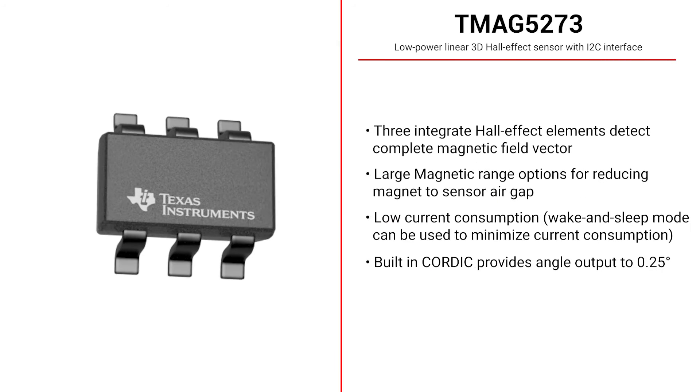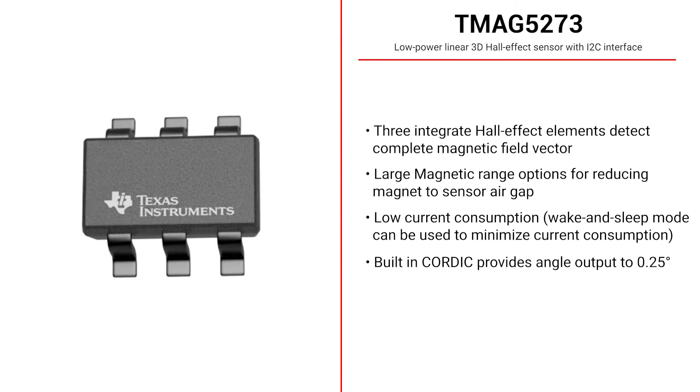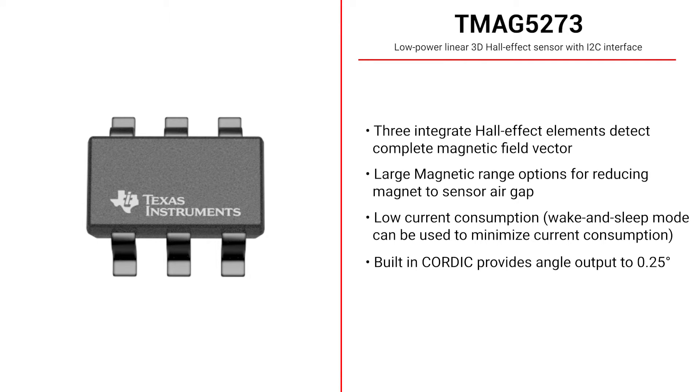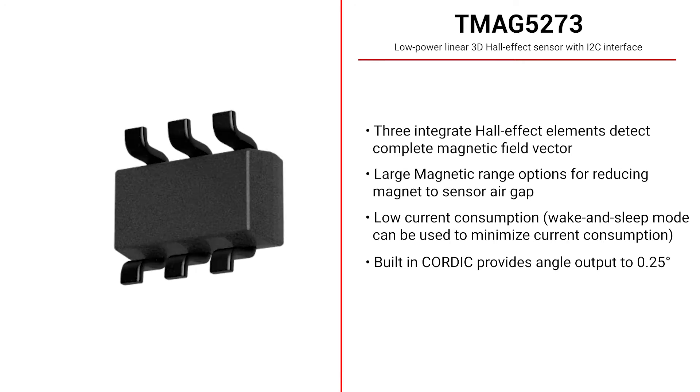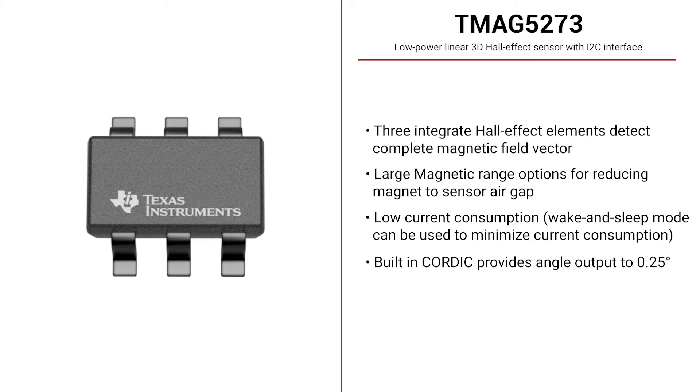Texas Instruments Magnetic Sensing portfolio provides many options when designing a system for magnetic liquid level sensing. The TMAG5273 is a 3D linear Hall effect sensor that provides the output magnetic data digitally over I2C. This sensor can achieve lower power consumption by enabling its wake-up and sleep options, all while providing angle calculations using the built-in CORDIC functionality.